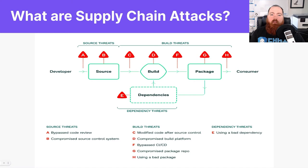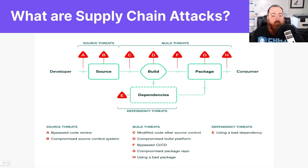Or at point F, where the CodeCov attack happened — attackers used leaked credentials to upload a malicious artifact to a storage bucket which was downloaded directly. Or possibly at point H, where the Browserify attack happened with typosquatting, where attackers uploaded a malicious package with a similar name as the original.